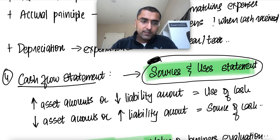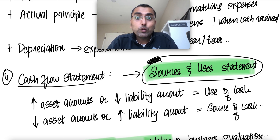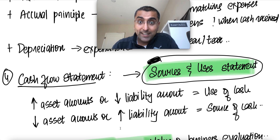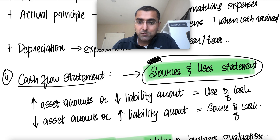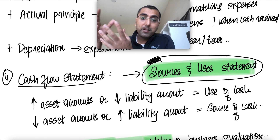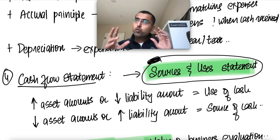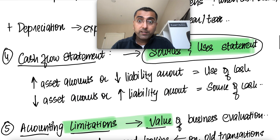The source of cash can come from two places. If you reduce your asset accounts — say you have cash in your bank and you reduce that balance — that's a source. Or if you borrow money and increase your liability, that's also a source. The opposite is the use of cash: if you increase your asset accounts, you're using money, or if you're paying down debt, you're reducing liability, which is a use of cash. Once you understand source and use, you can look at the balance sheet and generate the sources and uses statement.